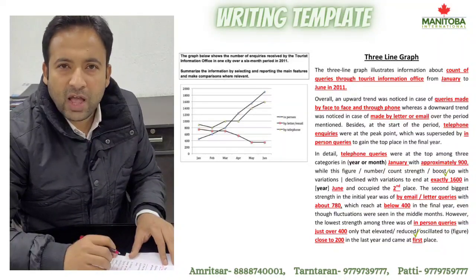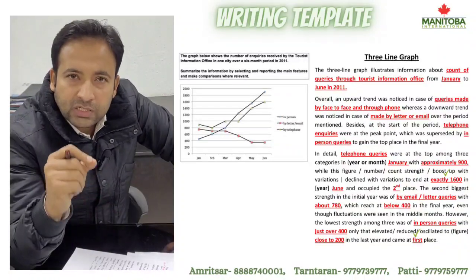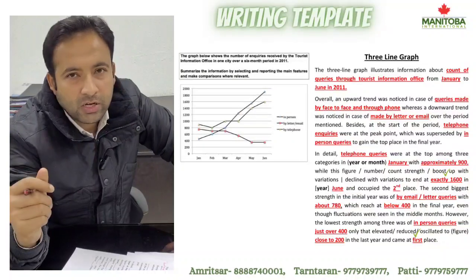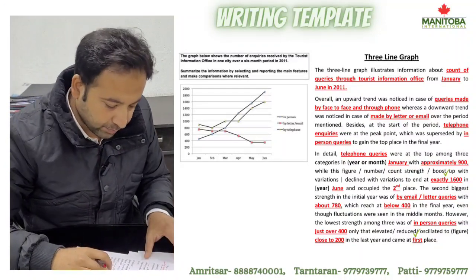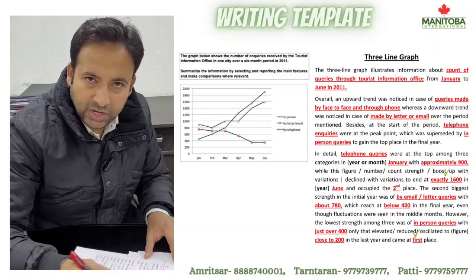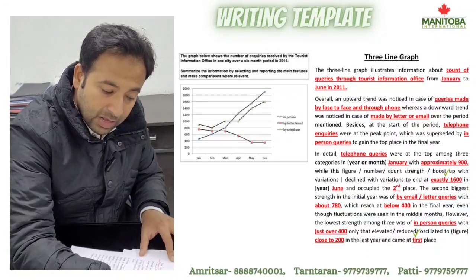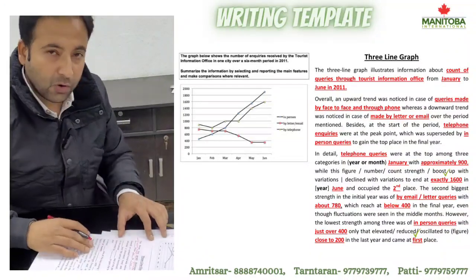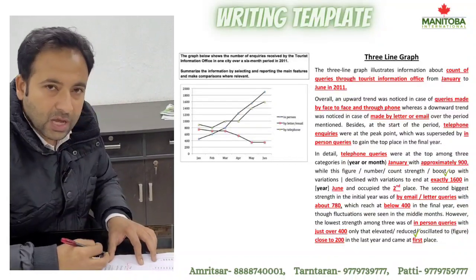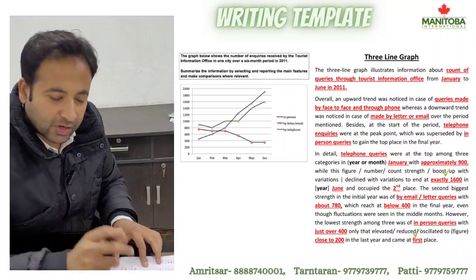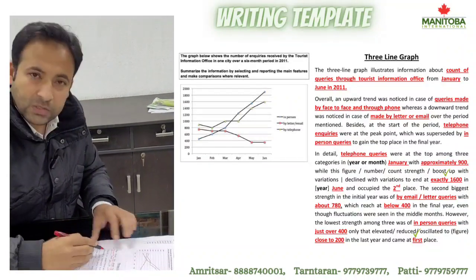In a line graph, we use 'an upward trend' or 'a downward trend.' Some teachers say 'increasing trend' or 'decreasing trend,' but to be honest those are misfit words — upward and downward are the best options. Now, an upward trend was noticed in case of — we have three types of queries: first, in person; second, by email or letter; third, by telephone. Two lines show an upward trend: first, in person, which I'll call face-to-face queries; second, by telephone, which means by phone.